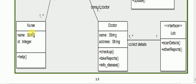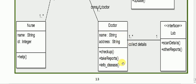For the Nurse class, the attributes are: name, ID, address, and mobile number. The operation for nurse is: help. For the Doctor class, the attributes are: name, address, mobile number, and ID. The operations for doctor include: check-up, take reports, give reports, and info.